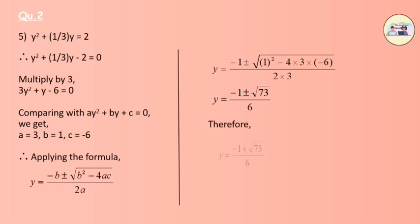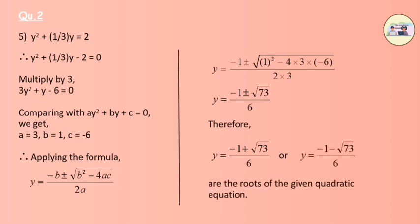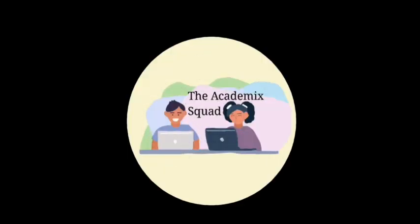Therefore y = (-1 + √73) / 6 or y = (-1 - √73) / 6. This is the solution. Thank you for watching the Academic Squad.